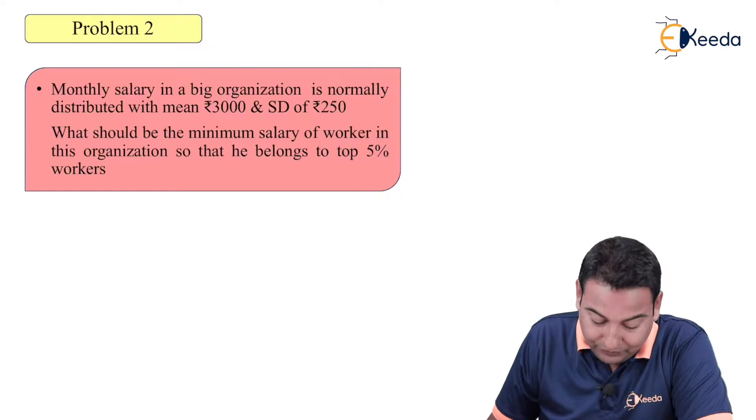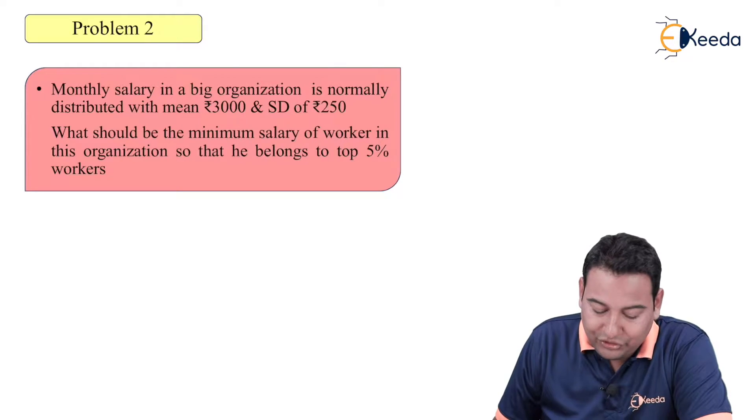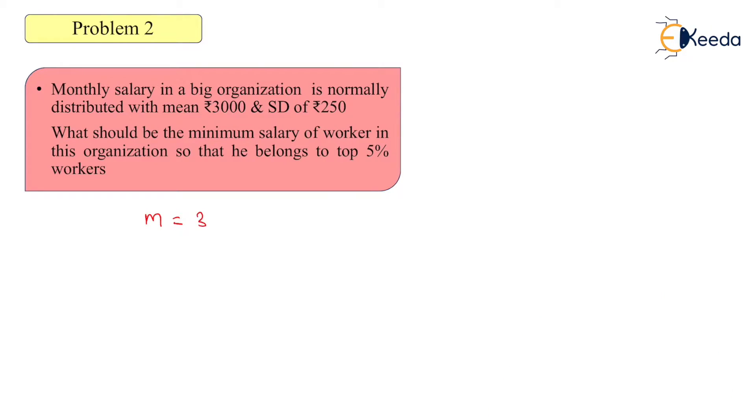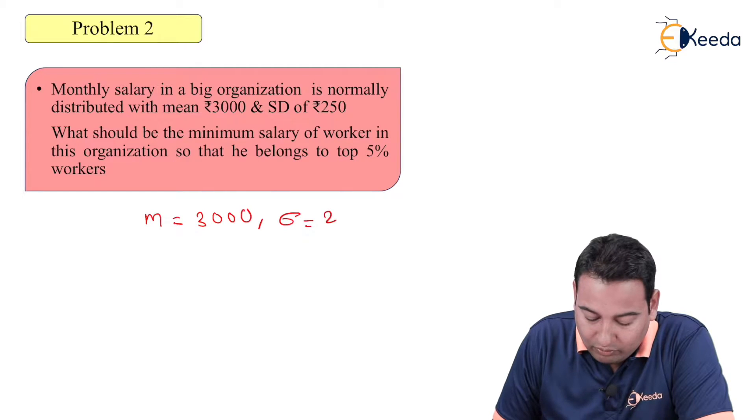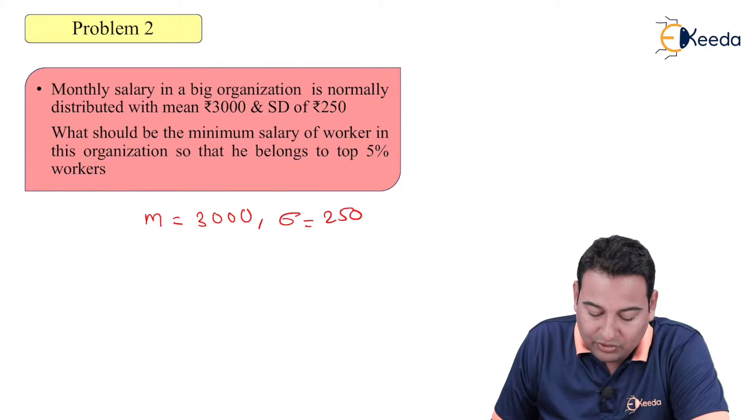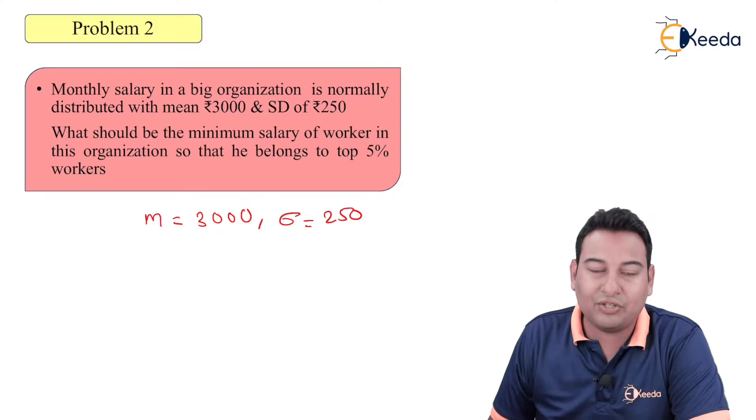This is my given problem: monthly salary in a big organization is normally distributed with mean 3000, m equals given, and standard deviation sigma equals 250. What should be the minimum salary of worker in this organization so that he belongs to top 5% workers?